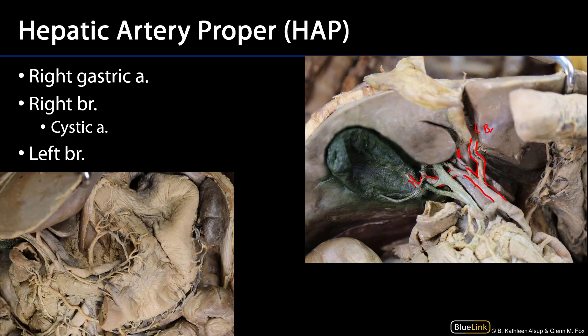The cystic artery, as you may recall, can reliably be found within the hepatobiliary triangle. That hepatobiliary triangle has three sides: the cystic duct, the common hepatic duct, and the visceral surface of the liver. And we can see here that, yes indeed, the cystic artery is being conveyed through the hepatobiliary triangle.